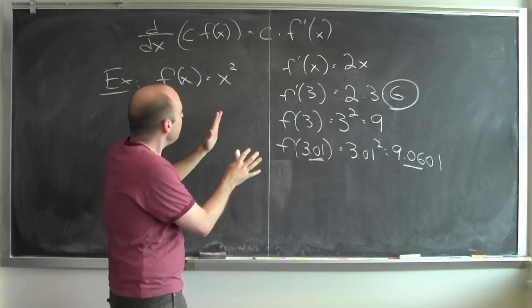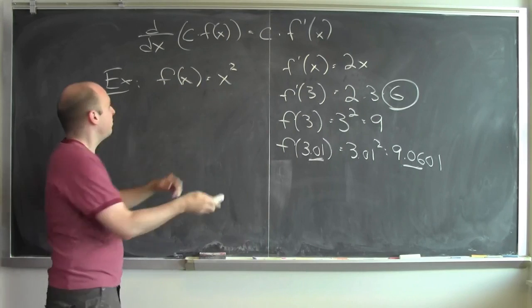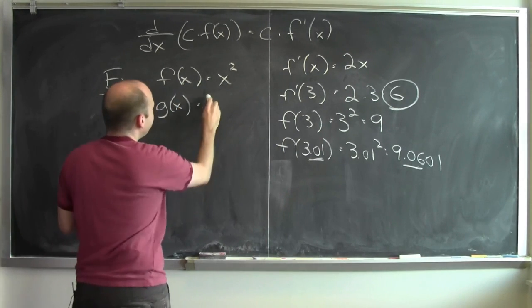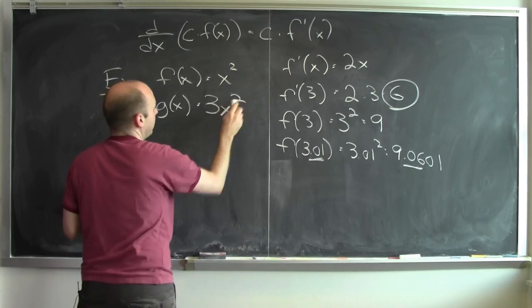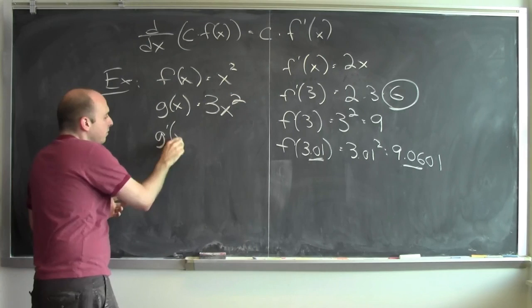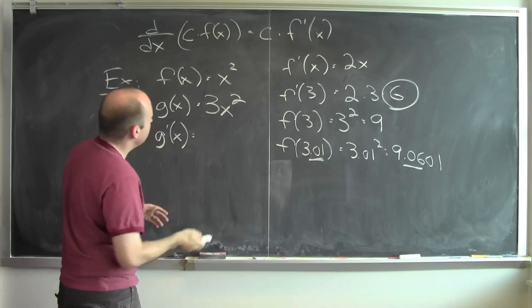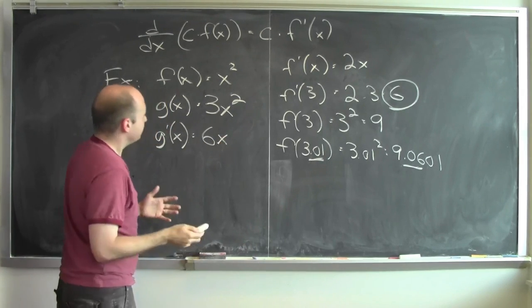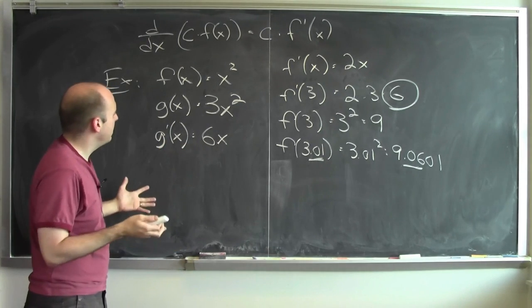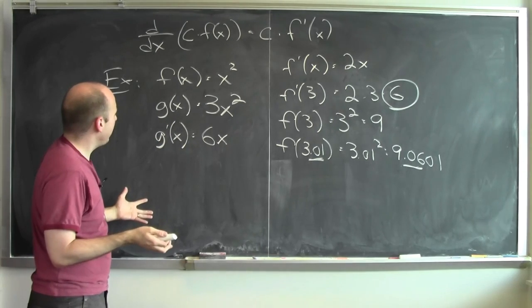Now, what if this function weren't just f of x equals x squared? What if it was g of x equals, I don't know, 3x squared? Well, then I know what the derivative of g of x is. It'd be 6x. But why is that sort of a reasonable thing?